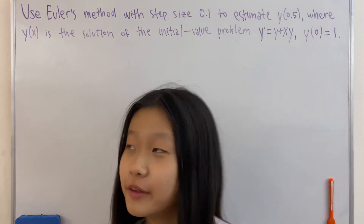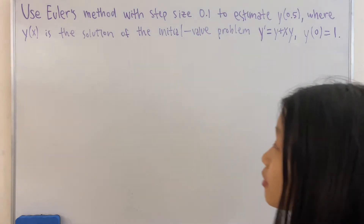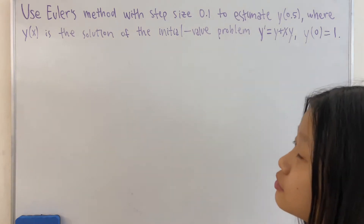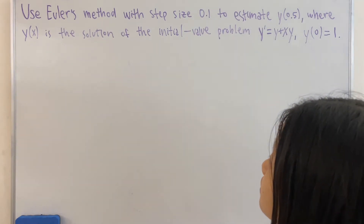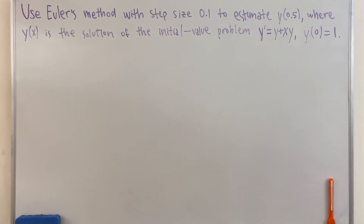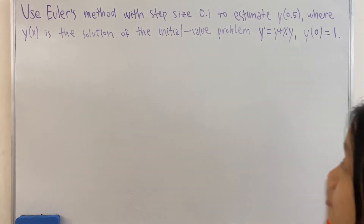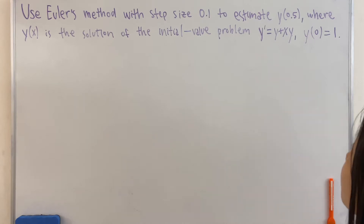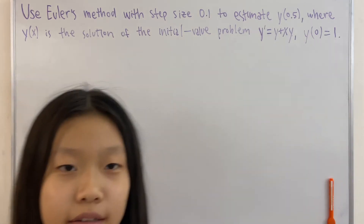Hello everyone! In this video we have a problem with Euler's method. It says: use Euler's method with step size 0.1 to estimate y when x is equal to 0.5, where y(x) is the solution of the initial value problem y' = y + x·y, and y(0) = 1.